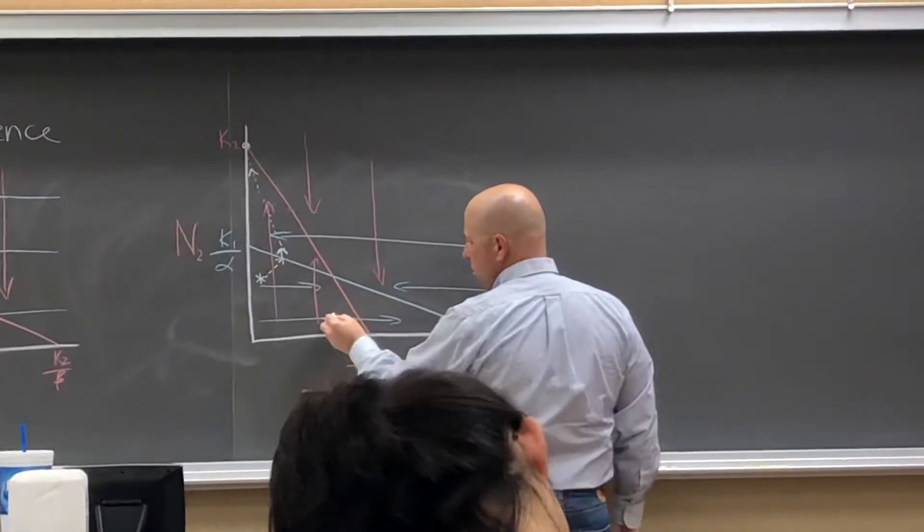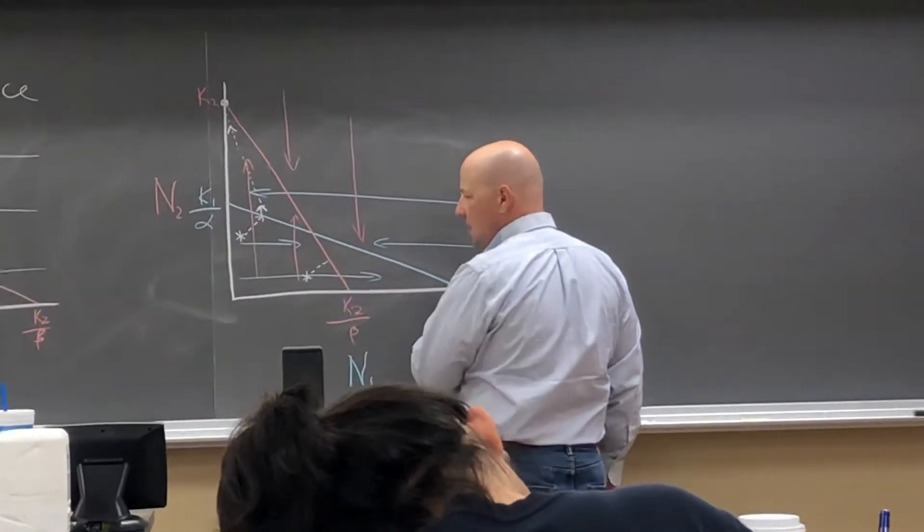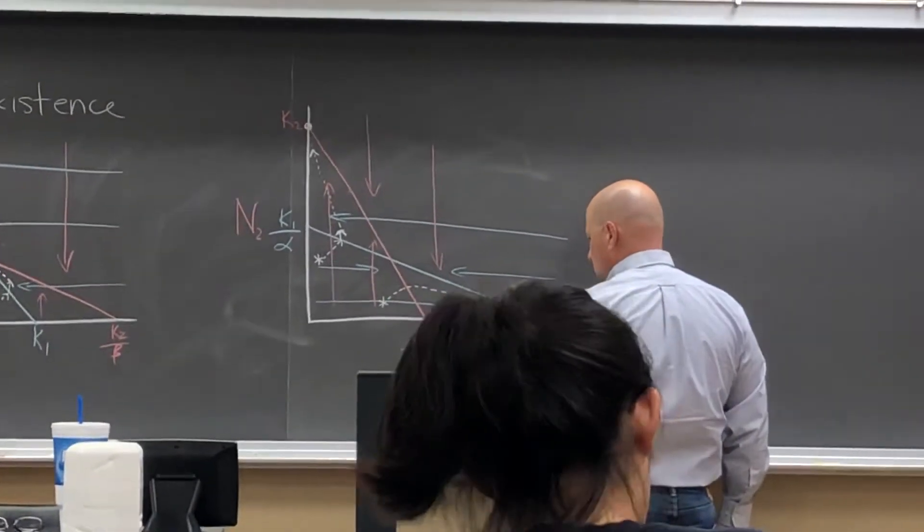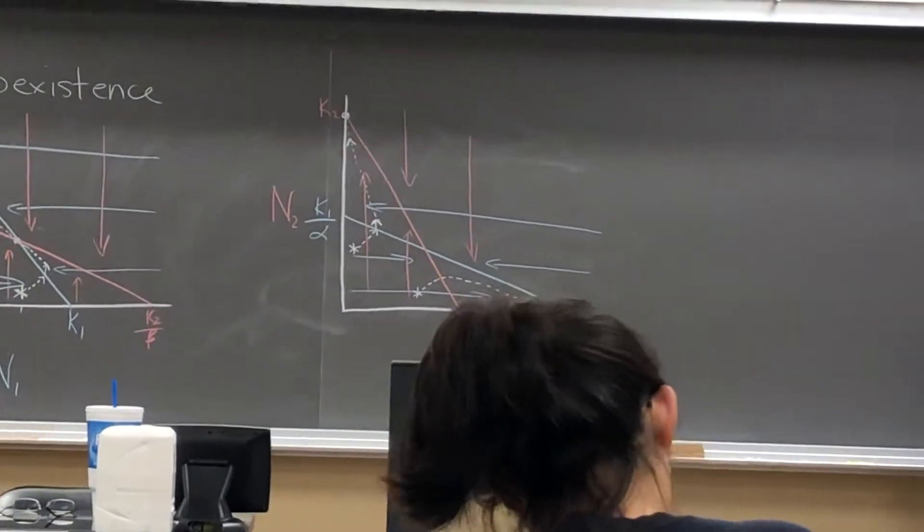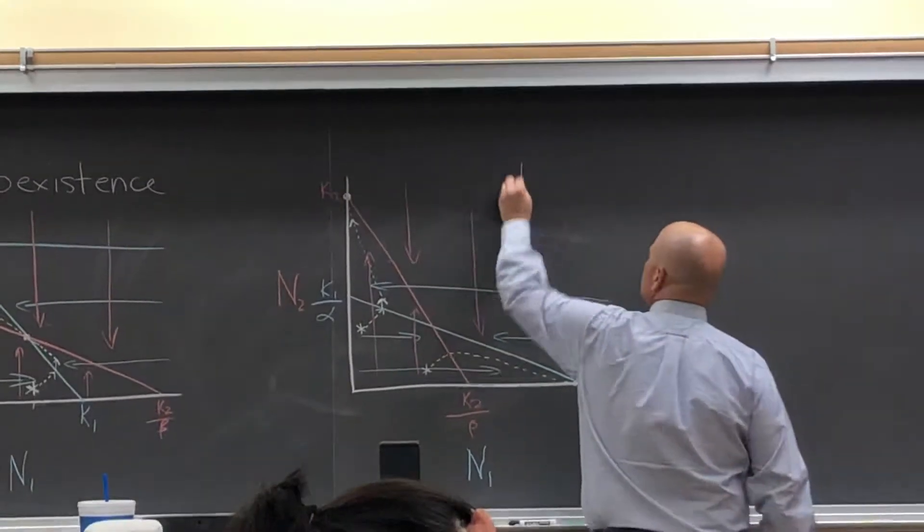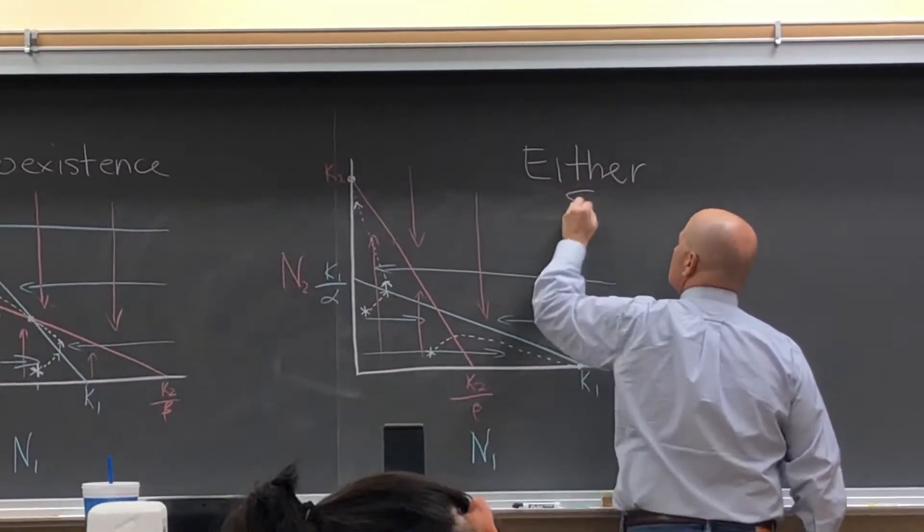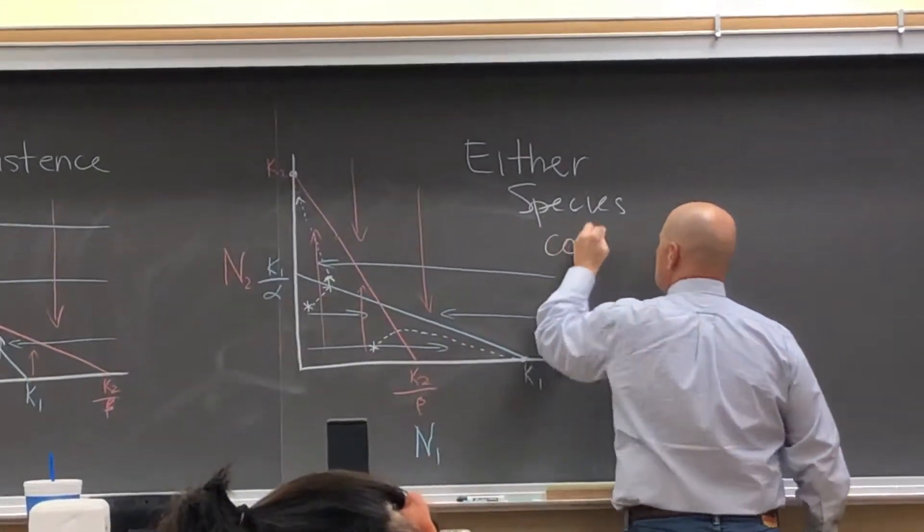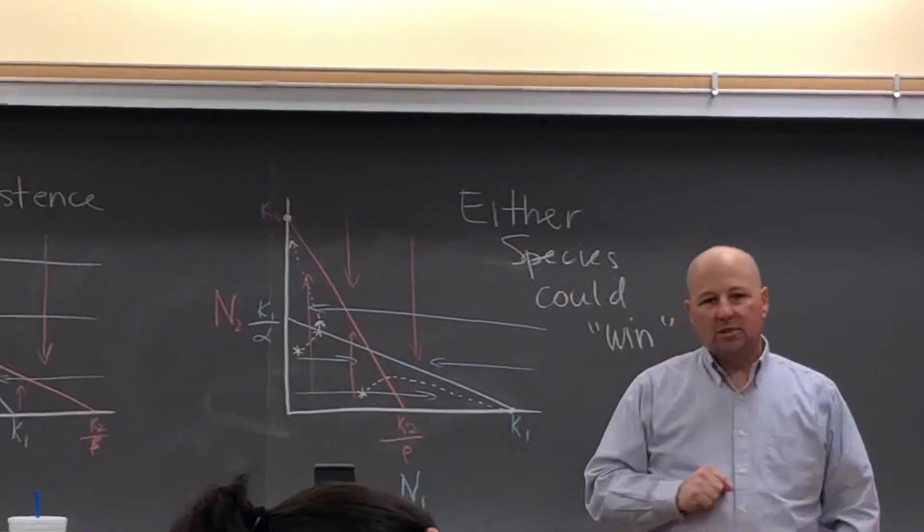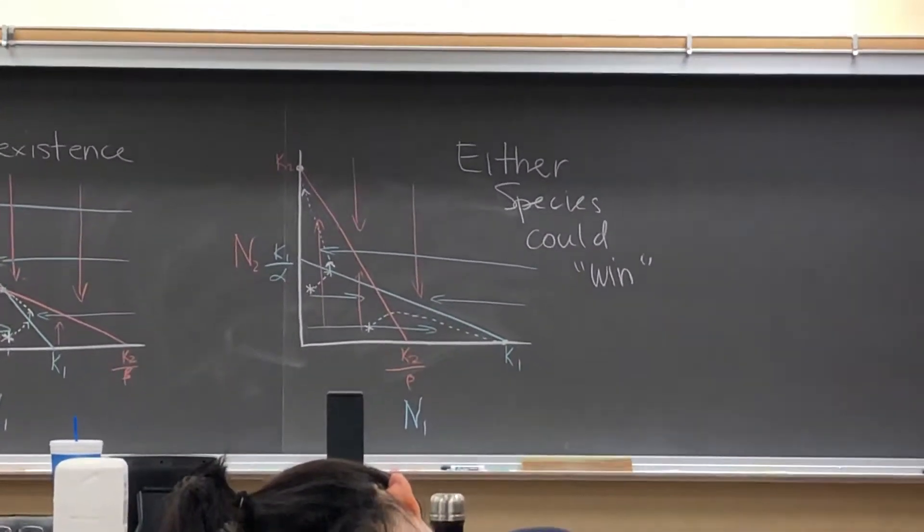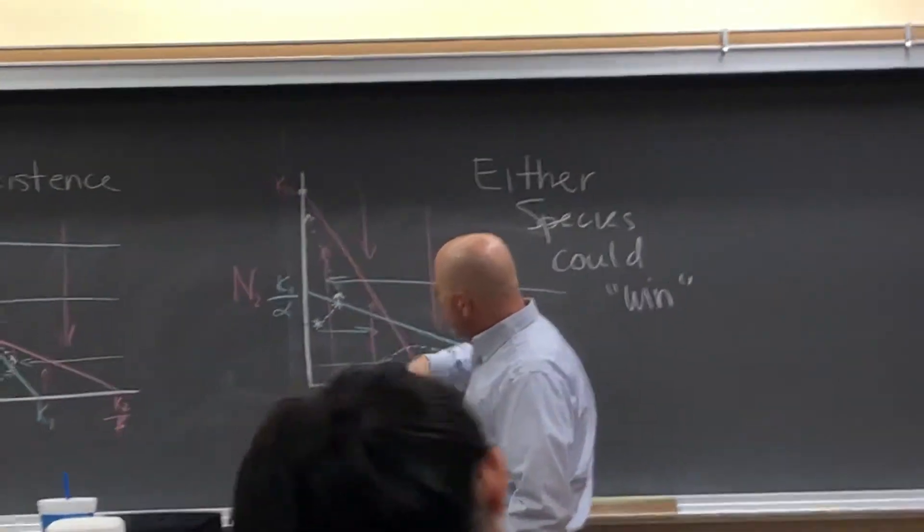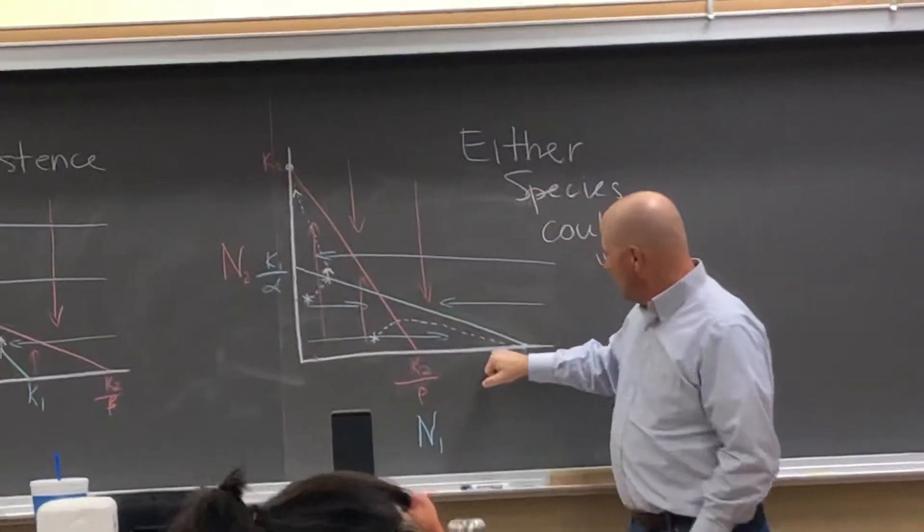But if we started here, so both populations grow until we get to the red line. Then population 2 is going to decline while population 1 continues to grow. We end up there. Now species 2 has been competitively excluded. So in this scenario, either species could win. So the outcome depends on which species has the numerical advantage to start with.